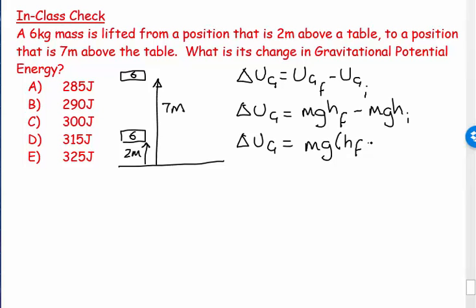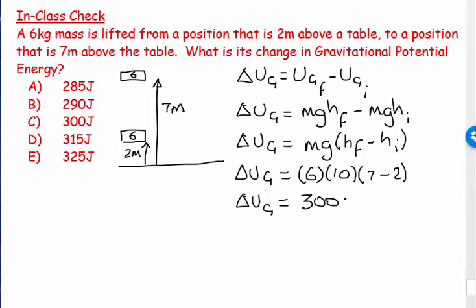So UG equals MG times H final minus H initial. The change in gravitational potential equals the mass, which is six, times the gravitational field strength, which is 10 newtons per kilogram, times seven minus two. So the change in potential energy is 60 times 5, which equals 300 joules. Let's see if it's on—yes, there it is.